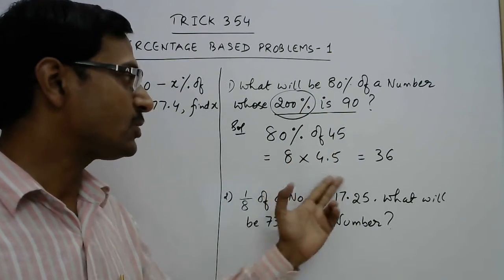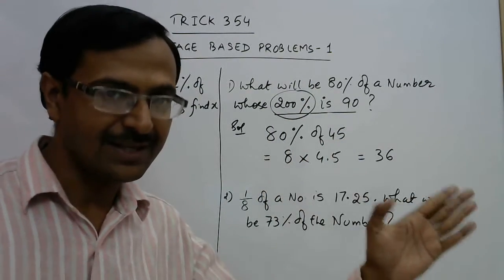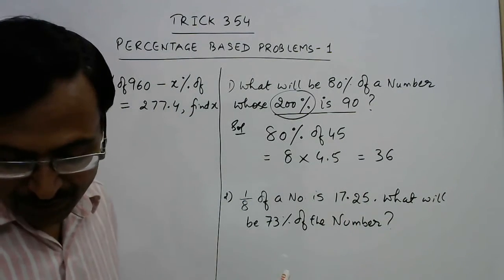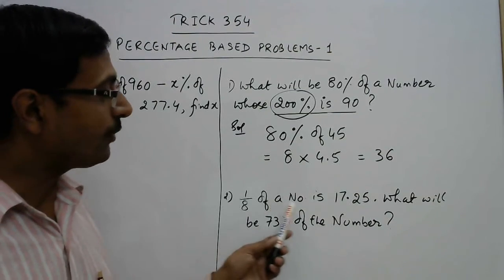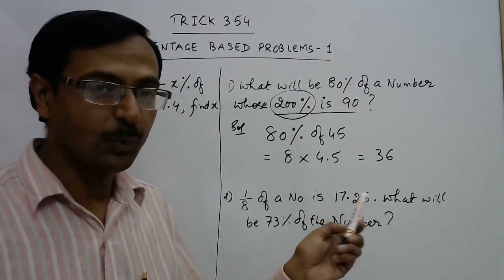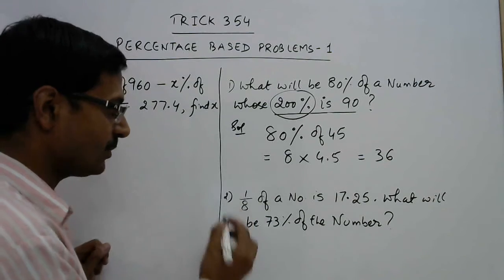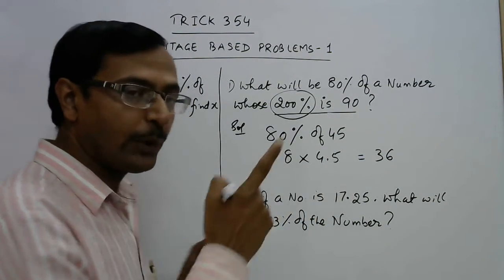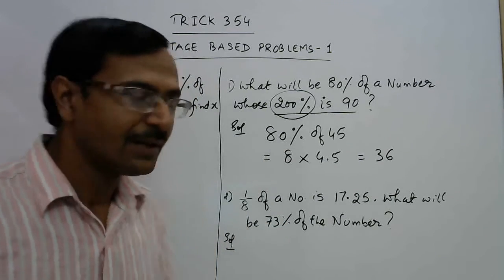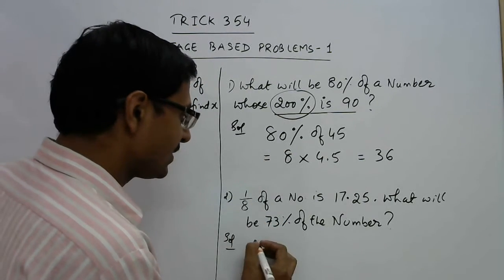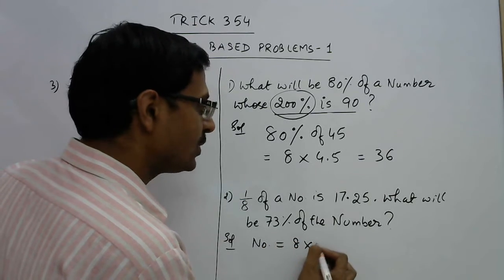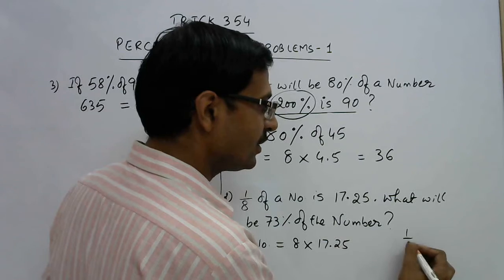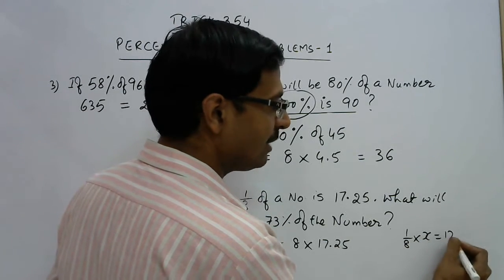Now let us see the second one. In this question we are given that one-eighth of a number is 17.25. Now understand this statement: one-eighth of the number is 17.25, that means the number is 8 into 17.25.